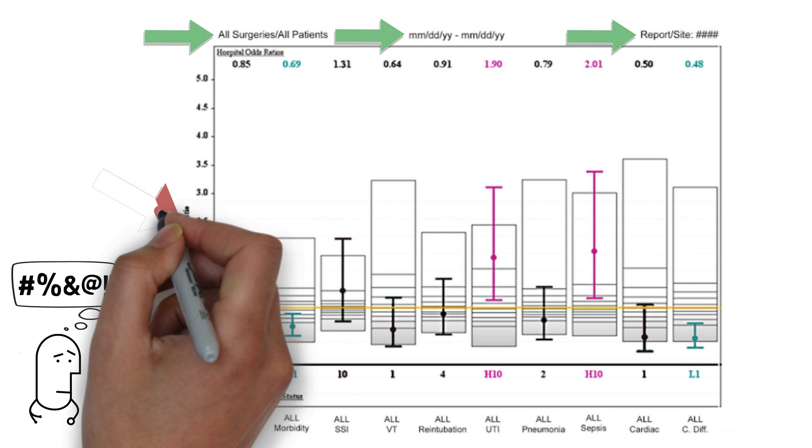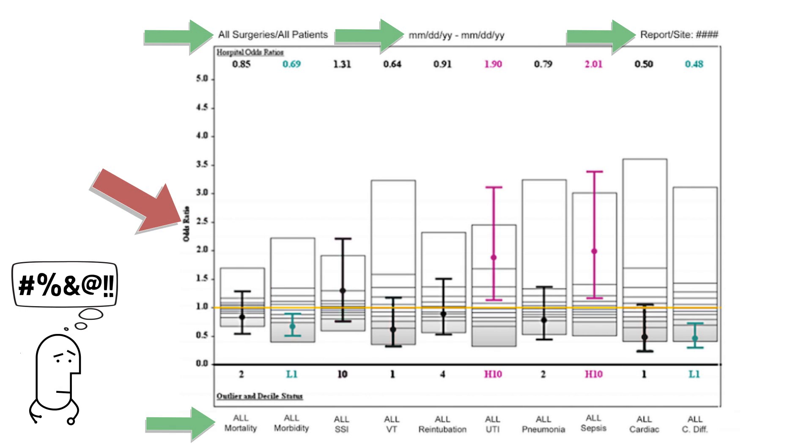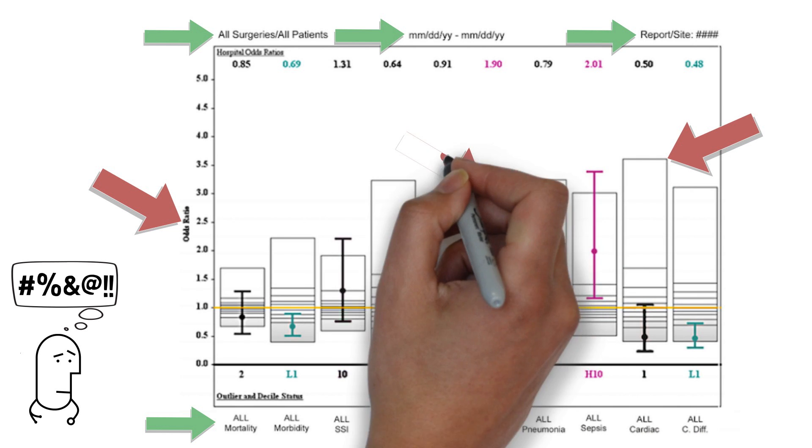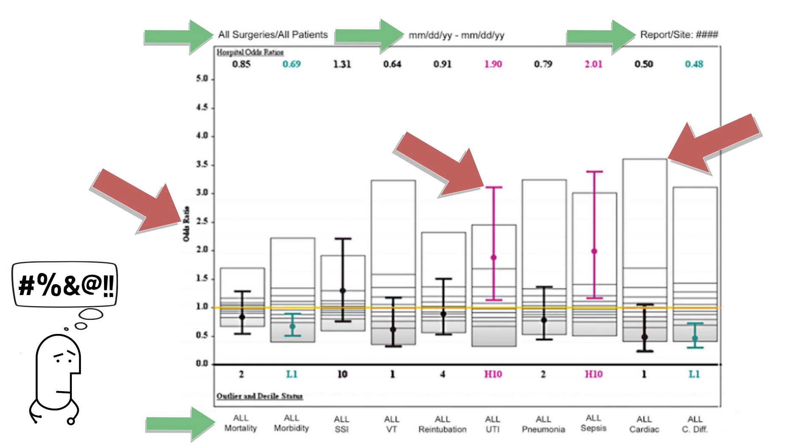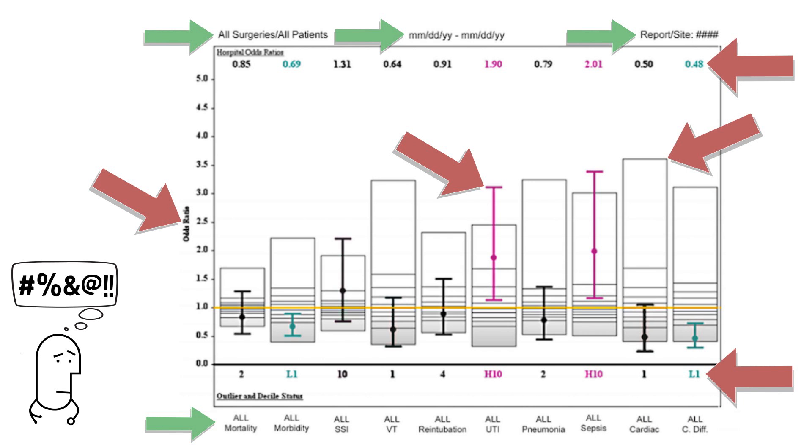Some of the elements on this graph that require a little bit more explanation include the odds ratio seen here on the y-axis, the gray boxes which we call centile boxes, the vertical lines with a dot in the middle which actually represent your data, some colored alphanumeric notations at the bottom, as well as some numbers at the top that are labeled hospital odds ratios. There's a lot to take in all at once, so I think it's worth looking at each of these elements in turn.